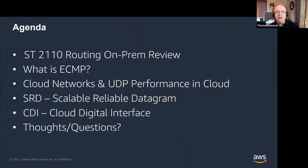Today we're going to cover a review of SMPTE 2110 and what on-prem networks look like. We'll talk about ECMP — Equal Cost Multipath Routing — and discuss what a cloud network looks like and what happens when you try to have large flows of UDP in the cloud. We'll talk about SRD, the Scalable Reliable Datagram, a way of effectively transmitting large flows over cloud networks. And we'll talk about CDI, the Cloud Digital Interface — how we transport audio, video, and other metadata such as closed captions and SCTE 35 triggers over SRD. Then we'll have hopefully a little bit of time for questions.